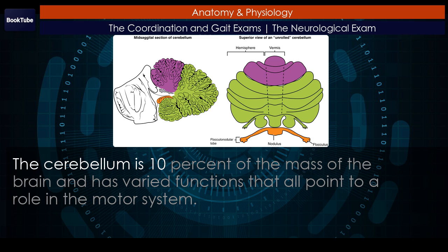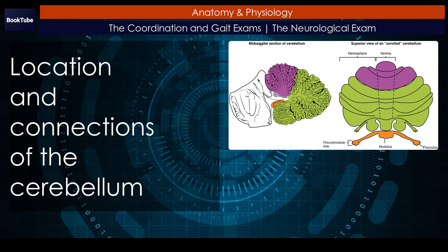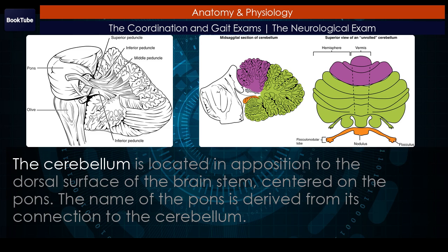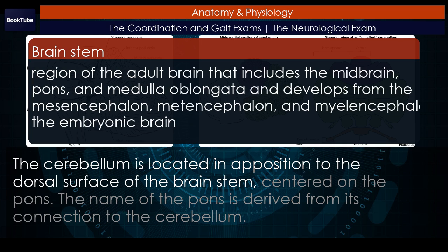The cerebellum is 10% of the mass of the brain and has varied functions that all point to a role in the motor system. The cerebellum is located in apposition to the dorsal surface of the brainstem, centered on the pons.